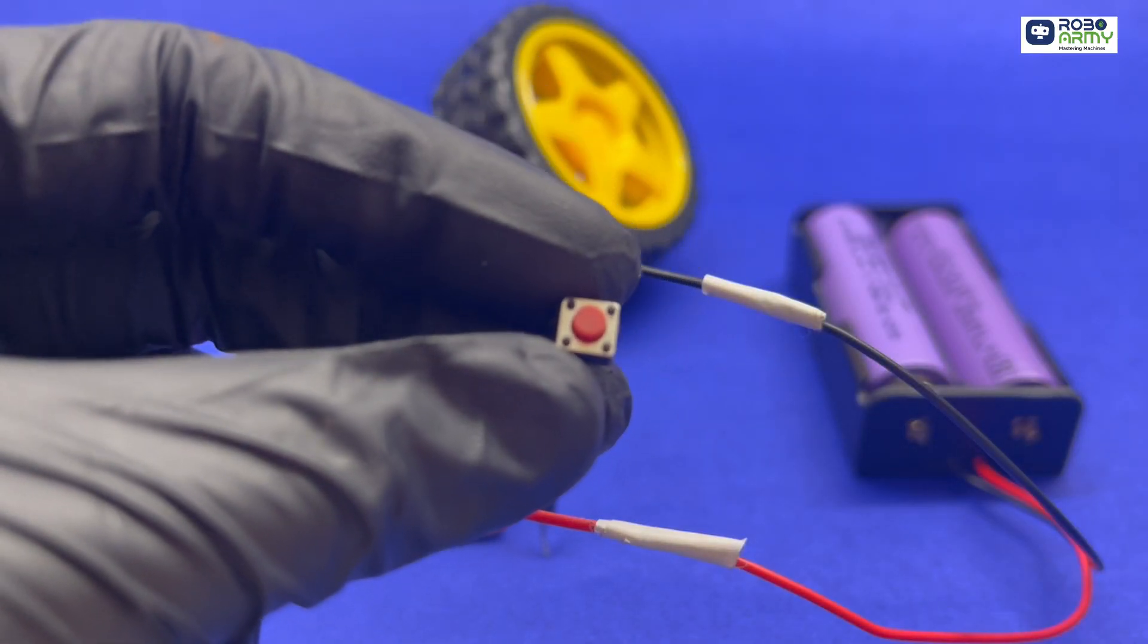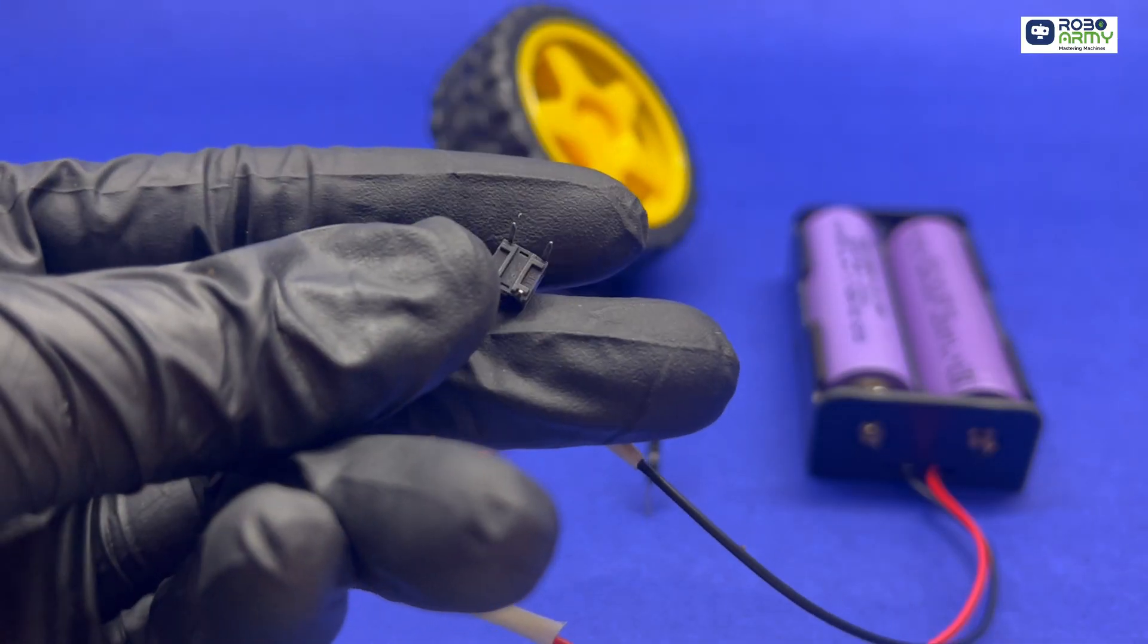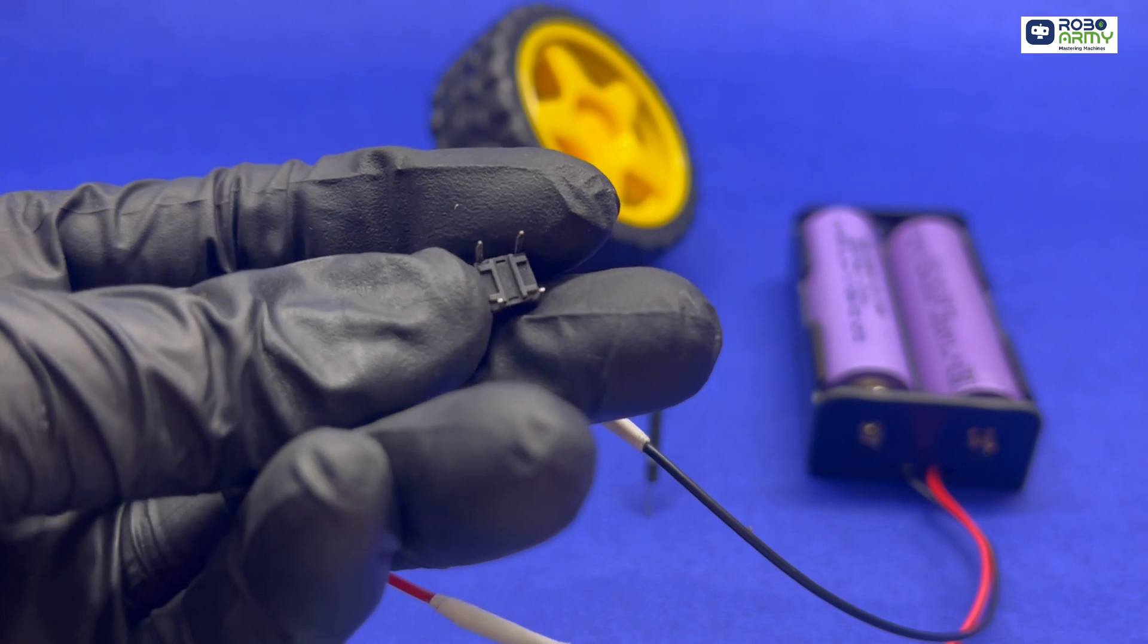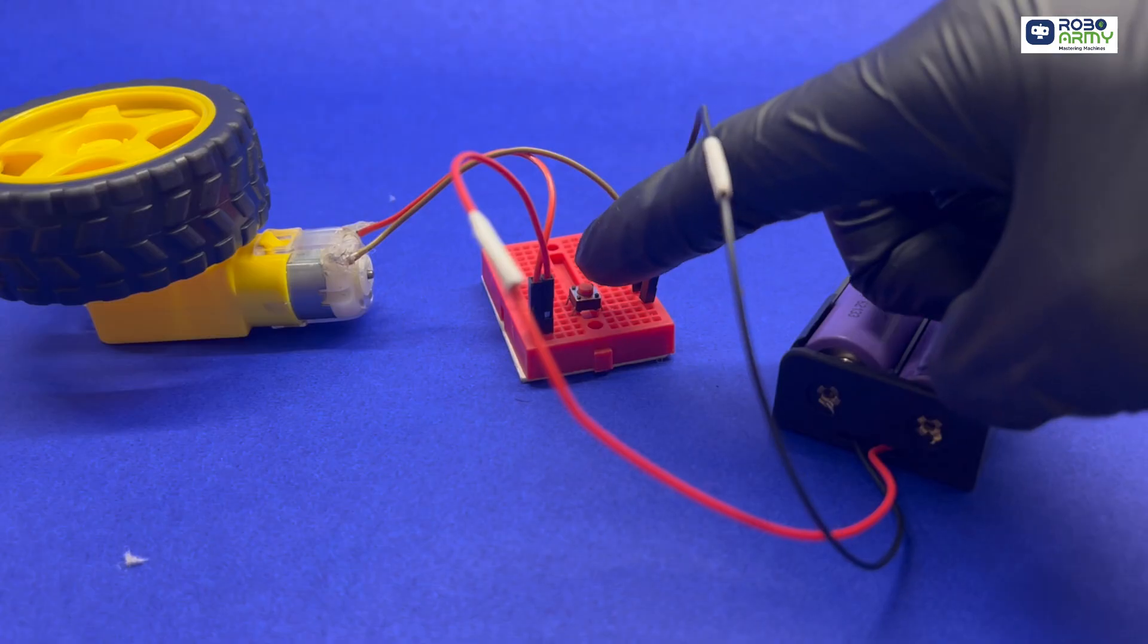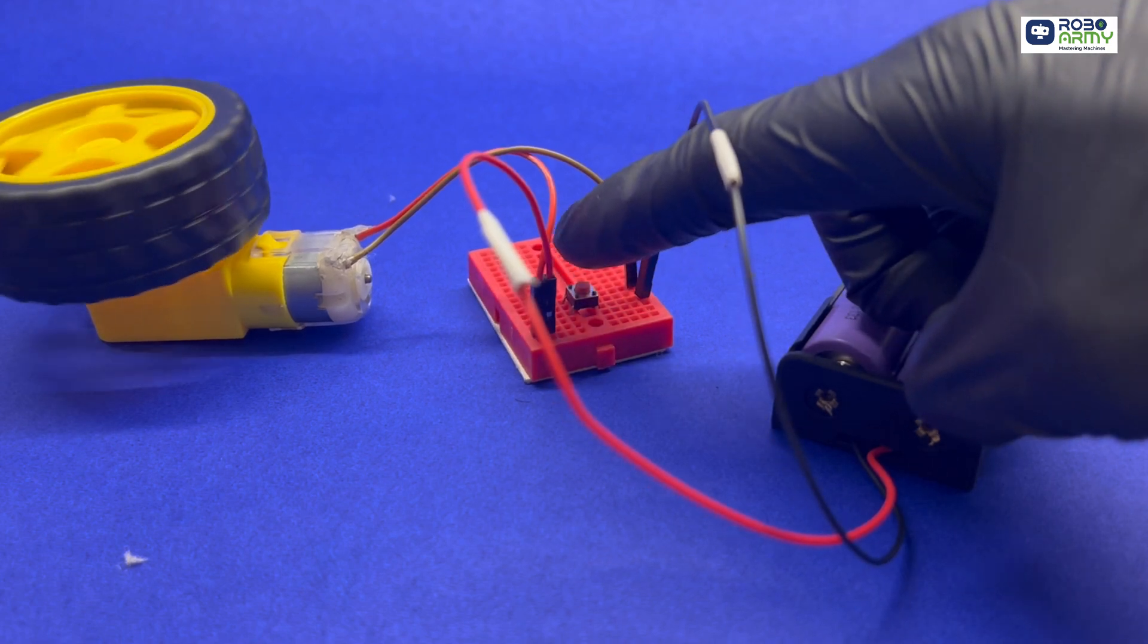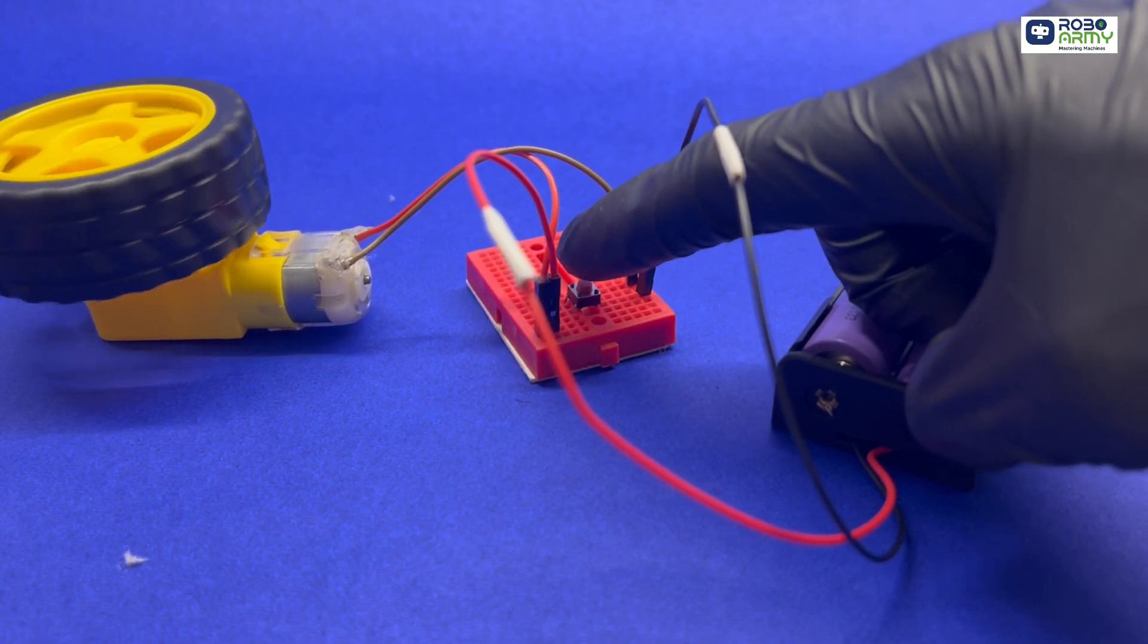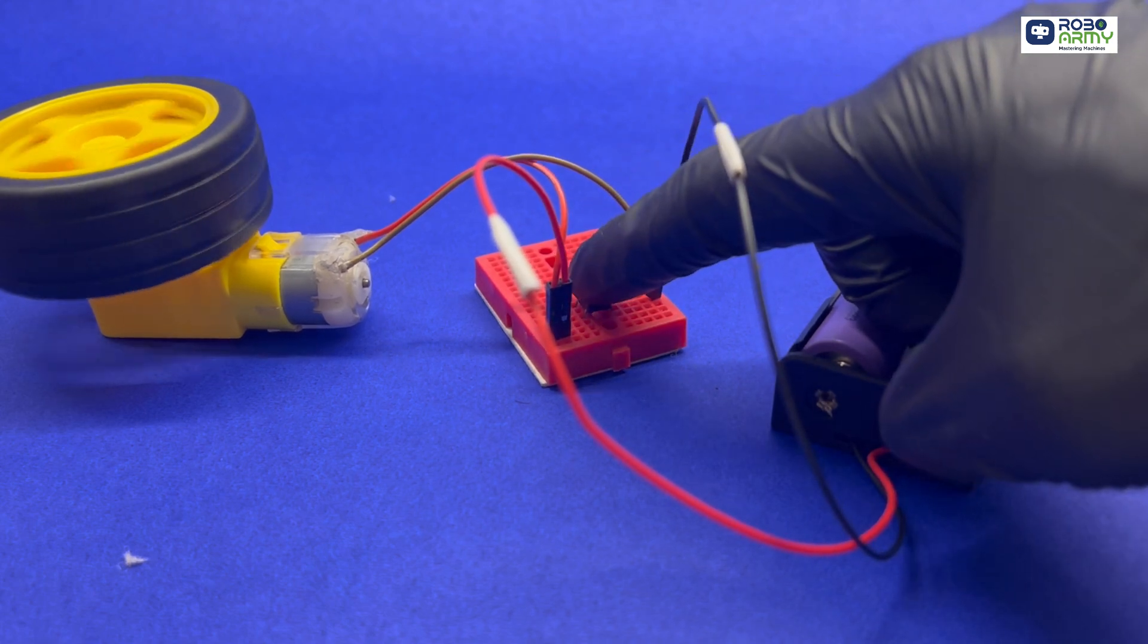Let's add a push button. It has four pins, we can say legs for stability. Place one button pin in the row with the negative battery wire. Connect the motor's wire to the opposite pin of the button. Pressing the button closes the circuit causing the motor to spin.